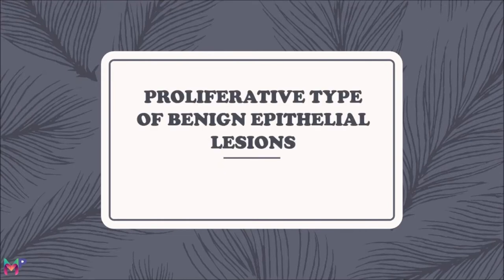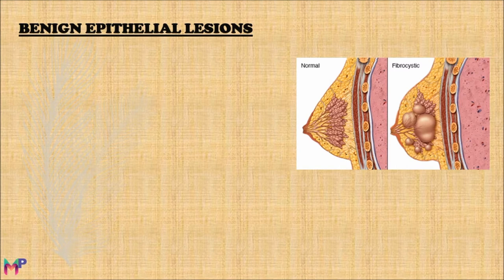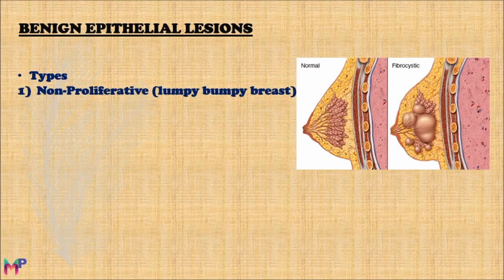Proliferative type of benign epithelial lesions is a continuation of the topic of fibrocystic changes from the section of breast. This topic is of great importance because of its close resemblance to carcinoma. Benign epithelial lesions are characterized by changes in the epithelium of the duct and the acini of the lobule. These lesions are most common in premenopausal women due to changes in estrogen levels. According to the risk of developing carcinoma, these lesions are divided into two types: the non-proliferative type and the proliferative type. The term fibrocystic changes is used for the non-proliferative type — the lumpy bumpy breasts — which carry no risk of developing carcinoma.